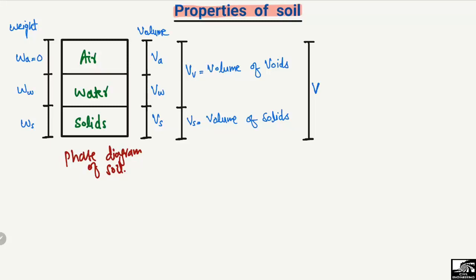The different properties of the soil include the water content, the void ratio, the porosity, the degree of saturation, the percentage air voids, and air content in the soil. We will define these different properties based on the phase diagram. This is the general phase diagram of the soil where we have the solids as the main part, then the water content in the soil, and then the air content in the soil. The soil always has these three components.